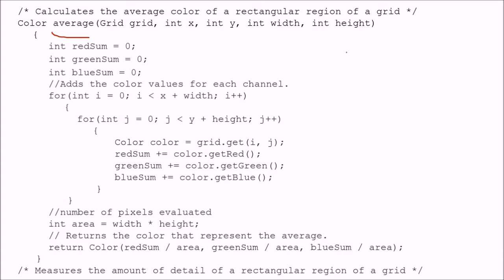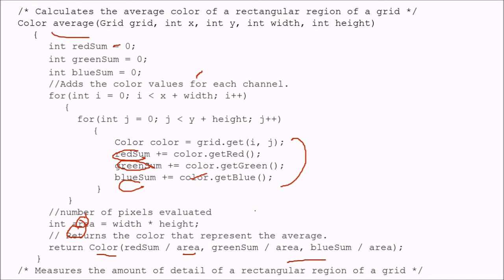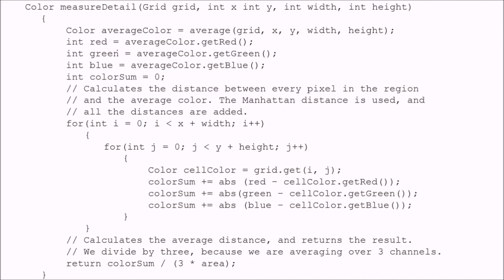We define a helper function to calculate the average color of a rectangular region of a grid. It starts with zero for red, green, and blue, adds the color values of each channel for all pixels, and the area is width times height. The average is computed as red_sum / area, green_sum / area, and blue_sum / area. This gives us the average color value of the rectangular region.